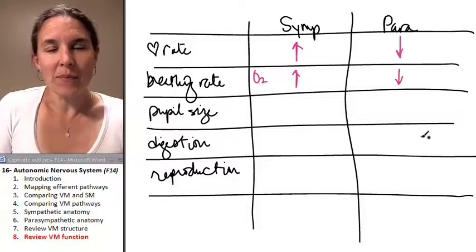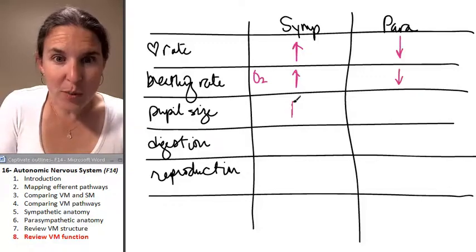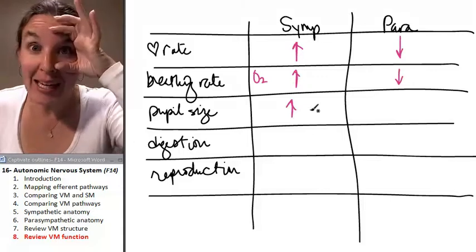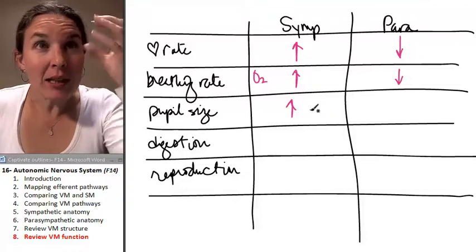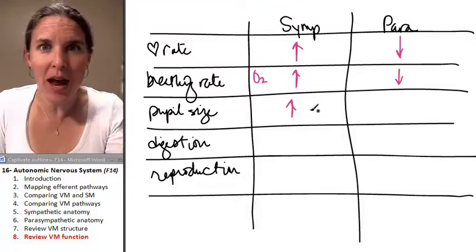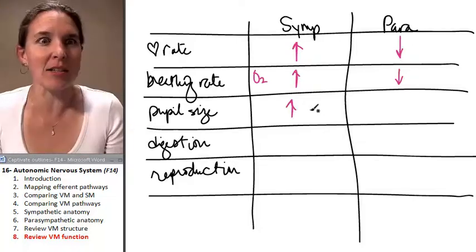When you see the grizzly bear, what happens to your pupil size? Your pupil size increases. Your pupils dilate. Why? Let in more light. Let in more light so you can see more, so that if that grizzly bear has its ears forward, you're going to know what to do because if its ears are back, you have to do something different.